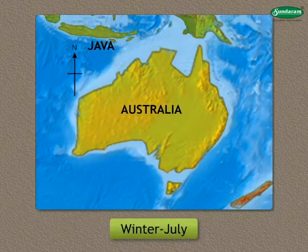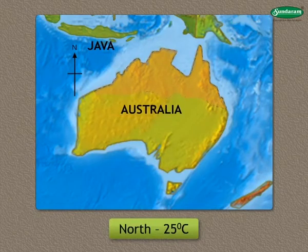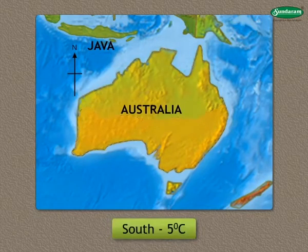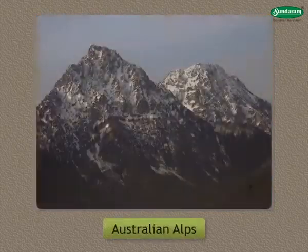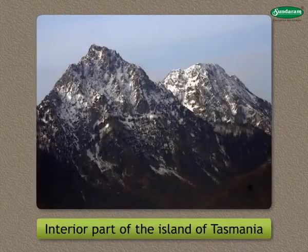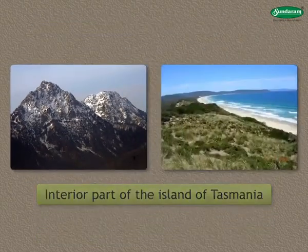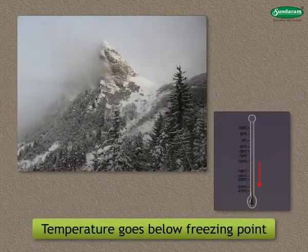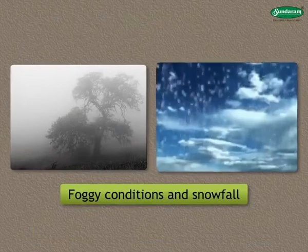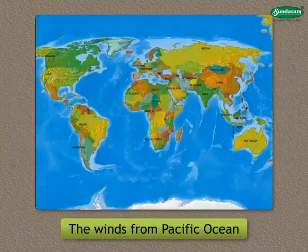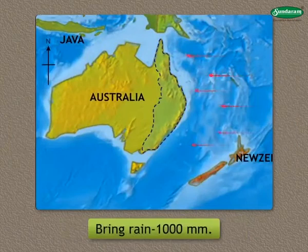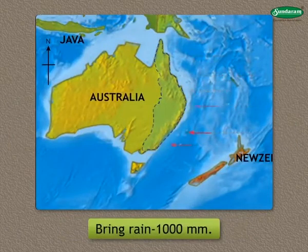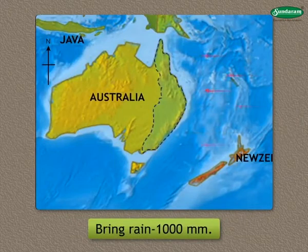During winter, in the month of July, the mean temperature in the north drops down to 25 degrees Celsius, while in the south it reaches 5 degrees Celsius. In the Australian Alps and the interior part of the island of Tasmania, the temperature during winter sometimes goes below the freezing point. It leads to foggy conditions and snowfall. The winds flowing from the Pacific Ocean bring rains to the mountainous region on the eastern coast. The rainfall in this region is 1,000 millimetres.